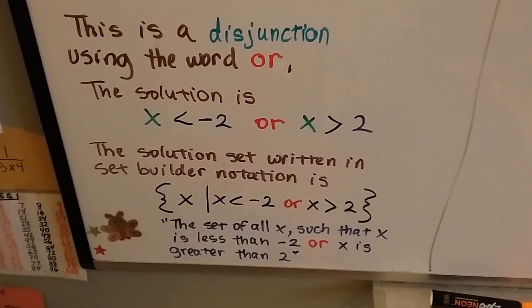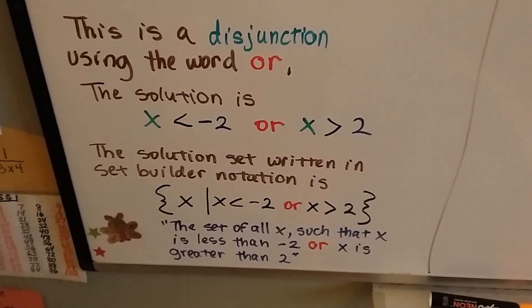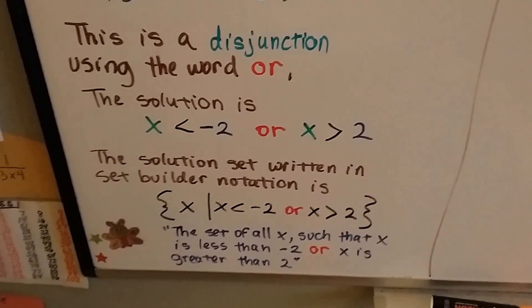It's just copied right into there. And we read that as the set of all x such that x is less than negative 2 or x is greater than 2.